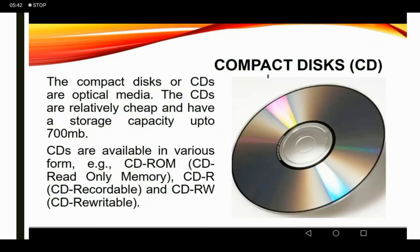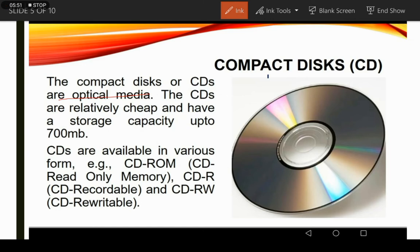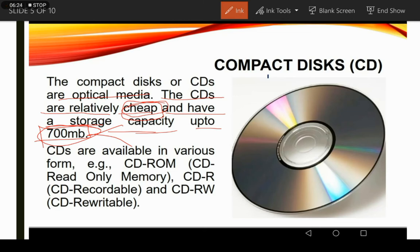The next device is the compact disk or CD. CDs are optical media and are relatively cheap — we can purchase a CD from the market for only 10 to 15 rupees. They have a storage capacity of up to 700 MB. CDs are available in various forms: CD-ROM which stands for CD Read Only Memory, CD-R which is CD Recordable, and CD-RW which is CD Rewritable.